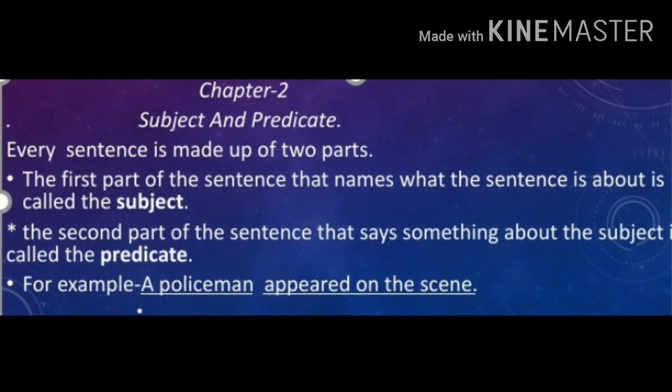Every sentence is made up of two parts. The first part of the sentence that names what the sentence is about is called the subject. The second part of the sentence that says something about the subject is called the predicate. For example, a policeman appeared on the scene. As you see the sentence very carefully, a policeman is underlined. Appeared on the scene is also underlined. But the first part is the subject and the second part, what we are talking about the policeman, is called the predicate.